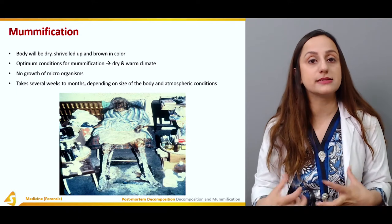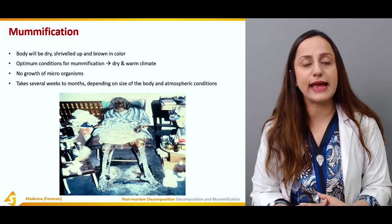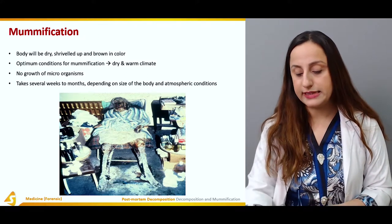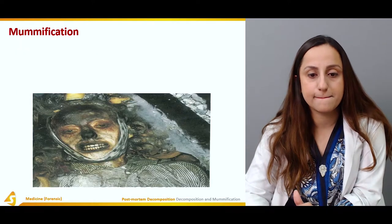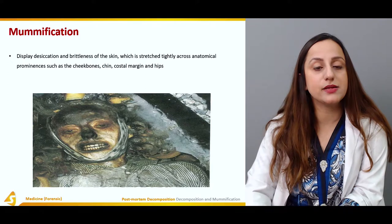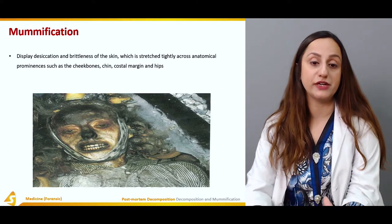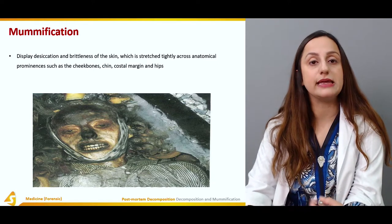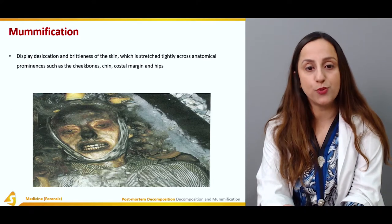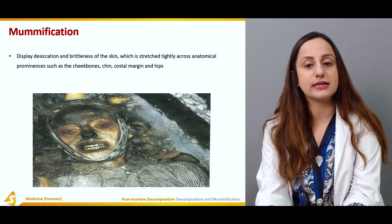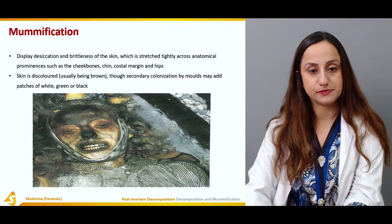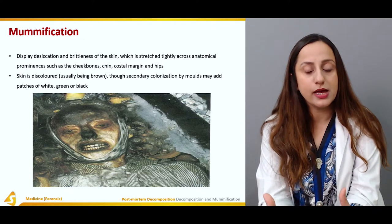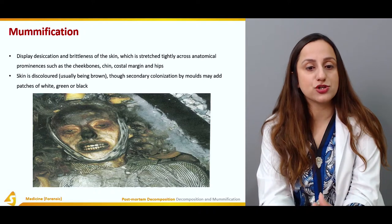Embalming is an artificial way of preserving dead bodies, carried out for learning purposes and when there are legal orders to preserve a body. The main features of mummification include desiccation and brittleness of the skin, which stretches tightly across anatomical prominences such as the cheekbones, chin, costal margins, and hips — the regions in close contact with bones desiccate first. The skin is quite discolored, usually brownish, and secondary colonization by molds may add patches of white, green, or black.